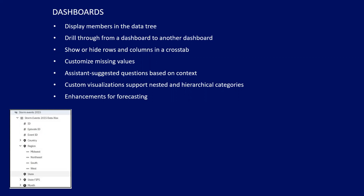Some of the dashboard changes: it now displays members in the data tree, which is great — instead of bringing over a region, you can pick one of the regions below it and drag it right over. They've enhanced drill-through so you can now drill from one dashboard to another. You can show and hide rows and columns in a crosstab, and you can do customizations on missing values — put in N/A or a zero — which seems simple but was previously missing.